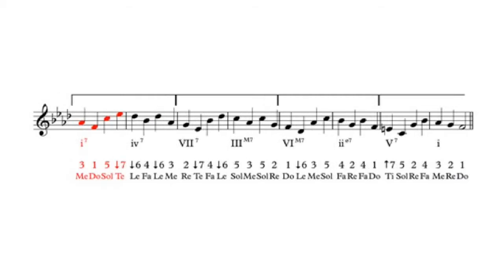Works the exact same way in minor: three, one, five, sev — six, four, six, three. Two, sev, four, six — five, three, five, two. One, six, three, five — four, two, four, one. Sev, five, two, four — three, two, one.